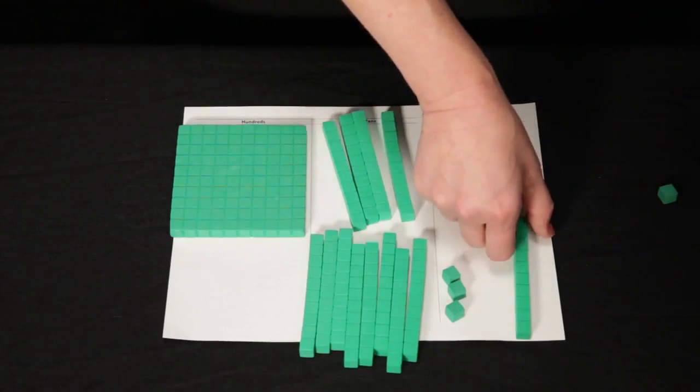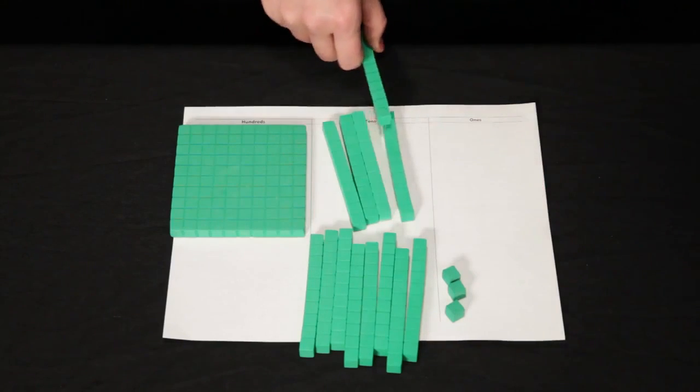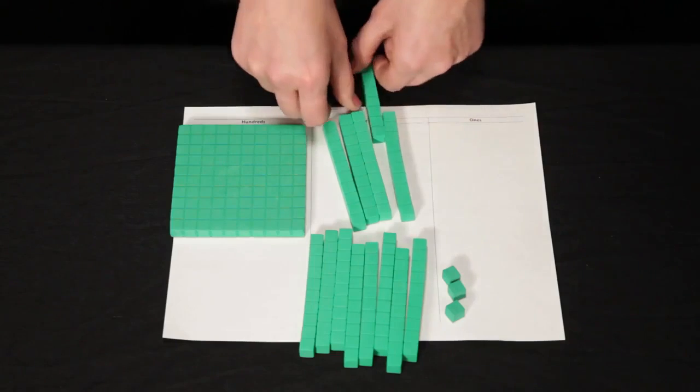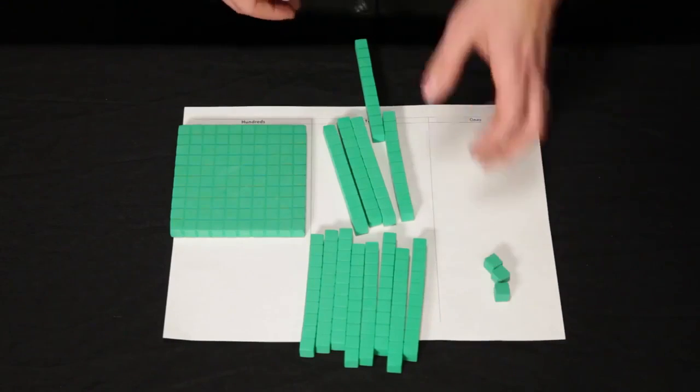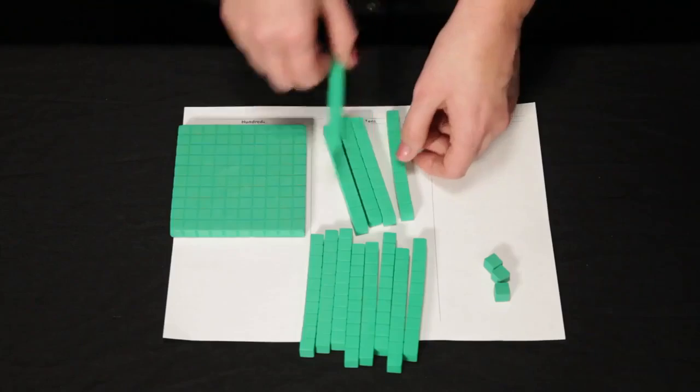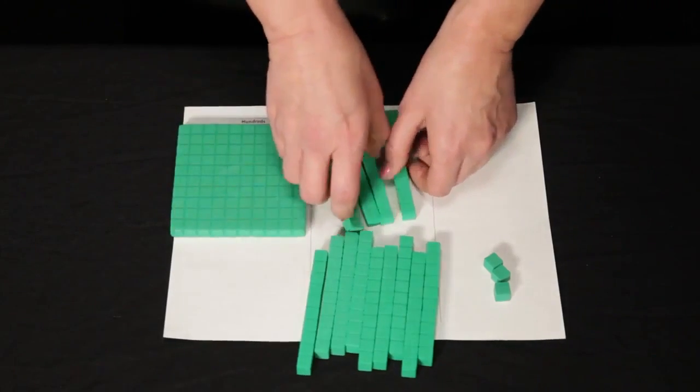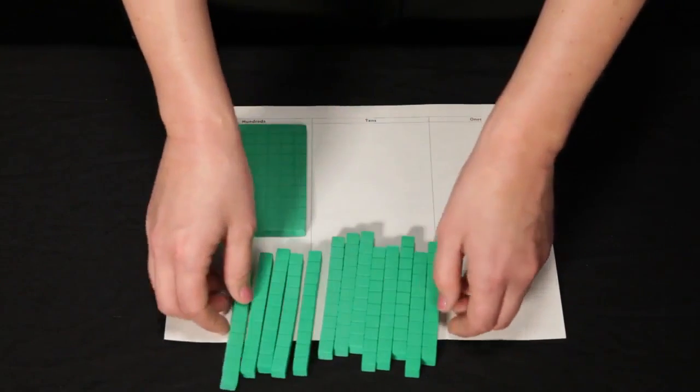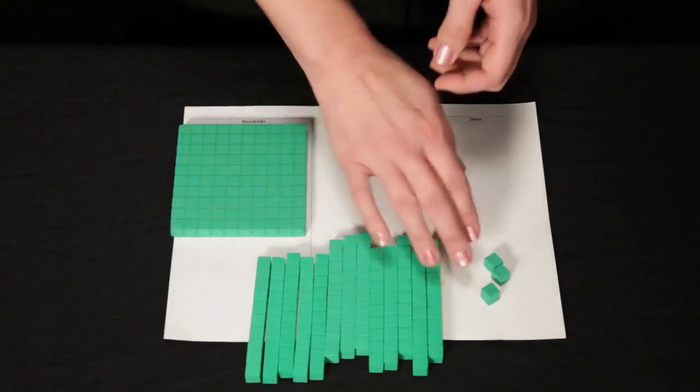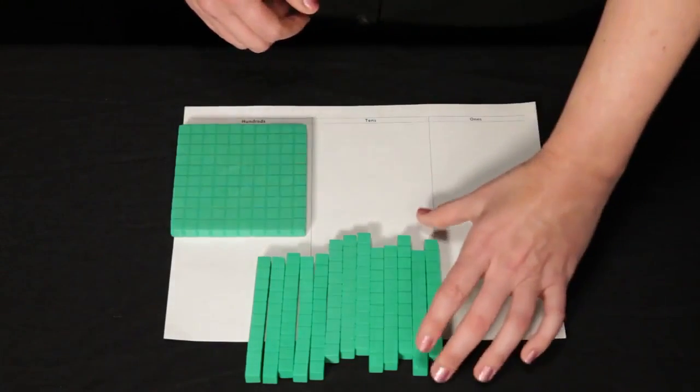Now I'm not going to leave this 10 here in the ones column. Instead I'm going to place it in the tens. Now I have my 3 ones over here and now I can add all the tens together. So I'll bring them here, move them all together. And I have to do the same check. If I have more than 9 tens I have to regroup.